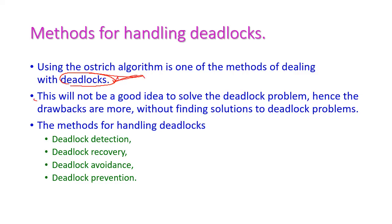But this is not a good idea to solve the deadlock problem. Hence, the drawbacks are more in this ostrich algorithm — without finding a real solution to the deadlock problem, the problem will not be solved. The methods used to handle deadlock are: deadlock detection, deadlock recovery, deadlock avoidance, and deadlock prevention.